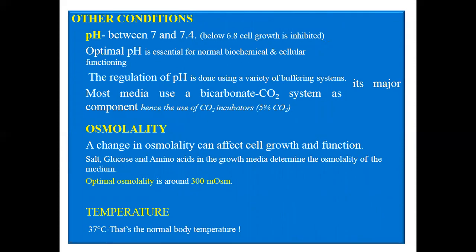Other conditions of culture media include pH. The optimum pH should be between 7.0 and 7.4, and regulation of pH is done using a variety of buffering systems; most media use a bicarbonate-CO2 system, hence the use of CO2 incubators. Regarding osmolality, a change in osmolality can affect cell growth and function; to maintain optimum osmolality, cells should be cultured at around 300 milliosmoles, and temperature should be maintained at 37 degrees centigrade.